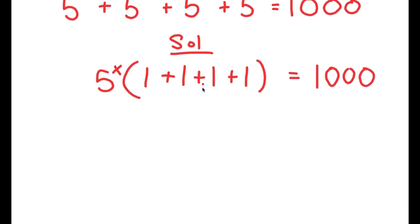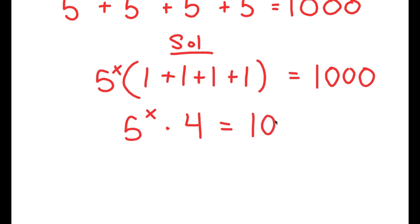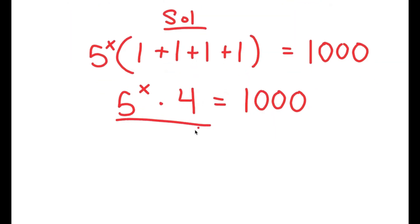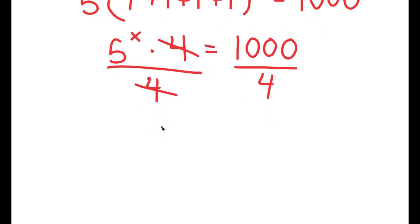Now, 1 plus 1 plus 1 plus 1 is 4, so I get 5 to the power of x times 4 is equal to 1000. We want to isolate x, so I'm going to divide both sides by 4, so these two cancel out, and I get 5 to the power of x is equal to 1000 divided by 4, which is 250.